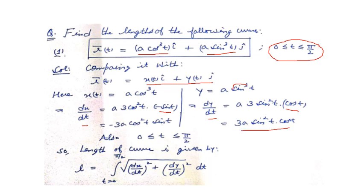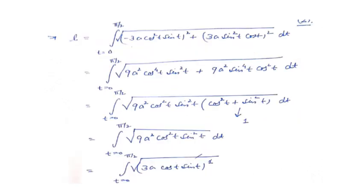Now we apply the formula. Since the question is in two dimensions, the formula becomes: length = integral from 0 to π/2 of √[(dx/dt)² + (dy/dt)²] dt. Plugging in the derivatives and squaring them, we find that 9a² is common in both expressions. Taking sine²(t) and cos²(t) as common factors, we are left with cos²(t) + sin²(t) inside the bracket, which equals 1. So we are left with √(9a²·cos²(t)·sin²(t)).